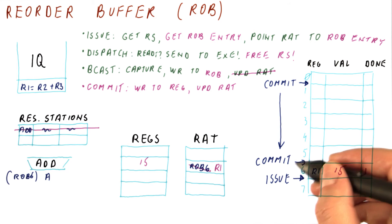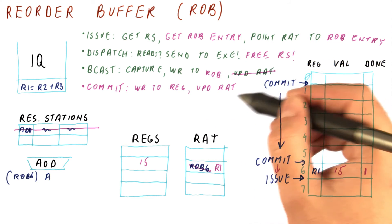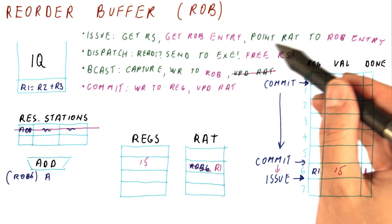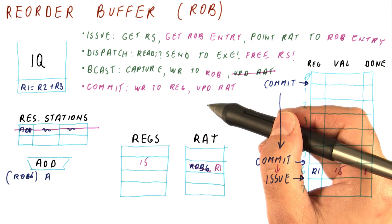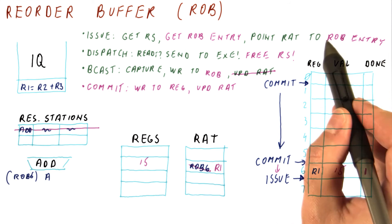And after committing this instruction, the commit point will move even further so that the next instruction to commit will be here. And that completes our reorder buffer processor step by step for one instruction. As you can see, many of the things are happening exactly the same as in Tomasulo's algorithm.